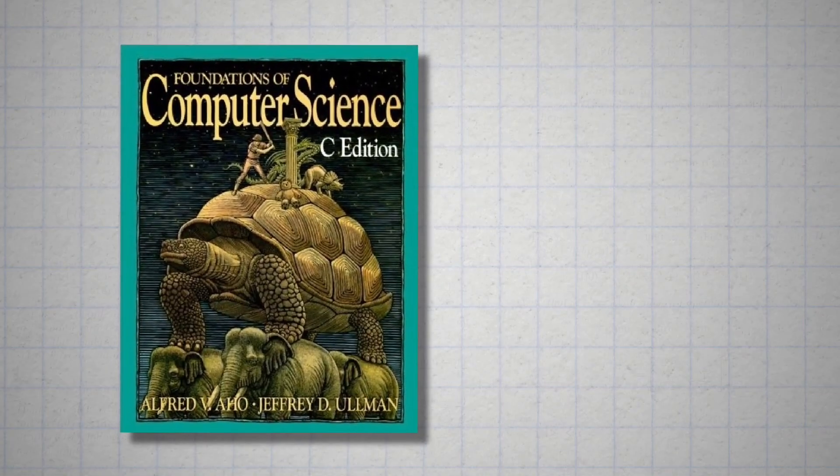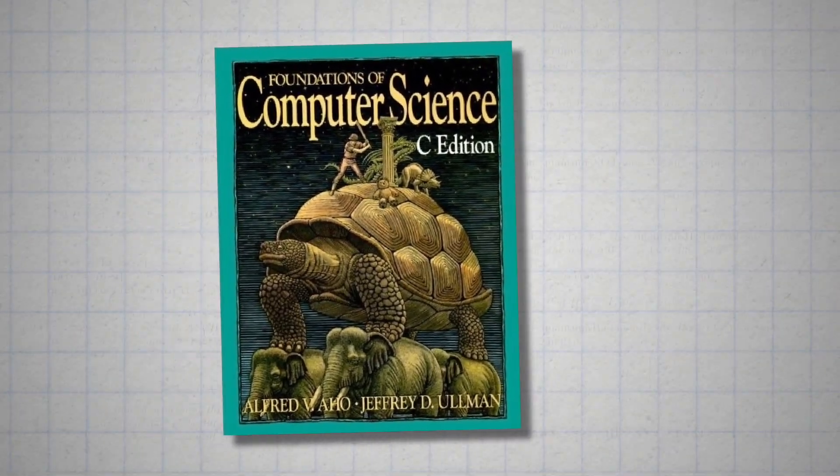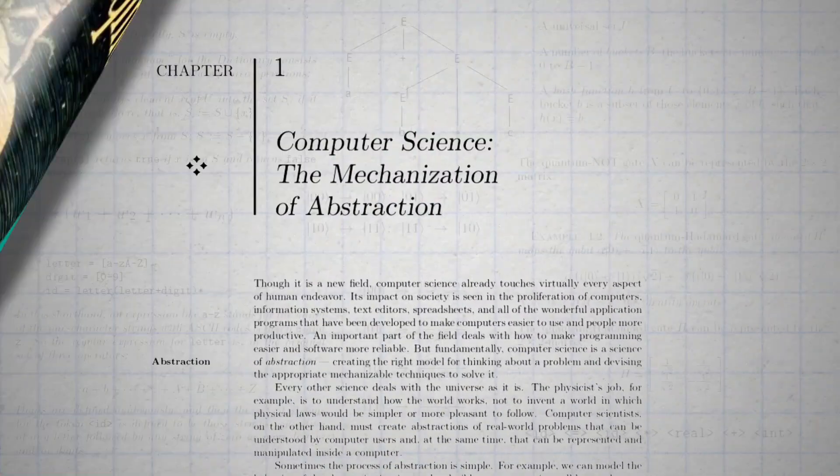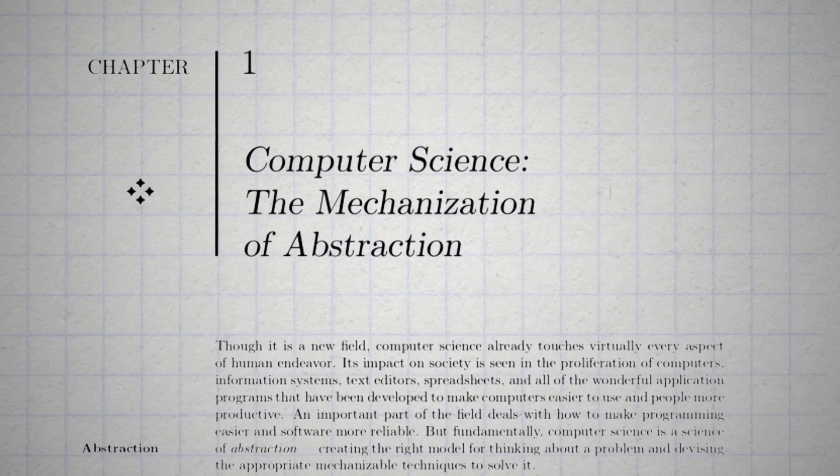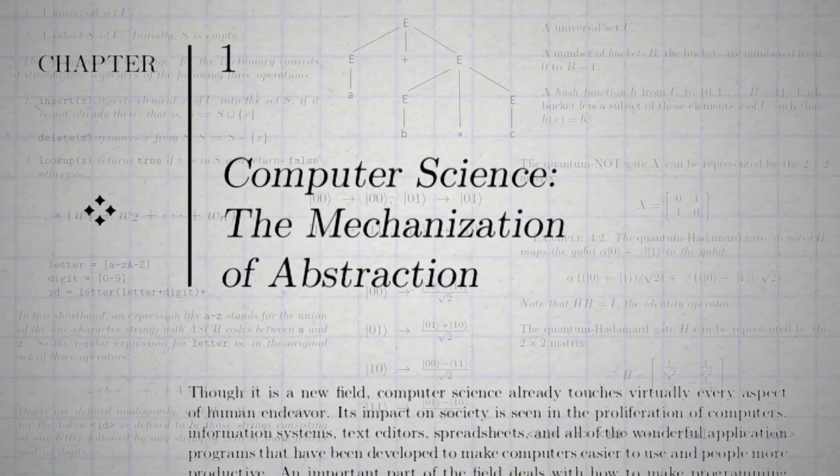When Jeff Ullman and I wrote our 1972 book entitled Foundations of Computer Science, we titled the first chapter Computer Science, the Mechanization of Abstraction.